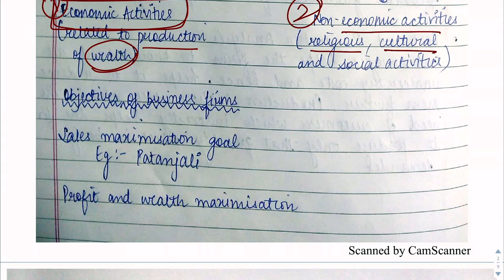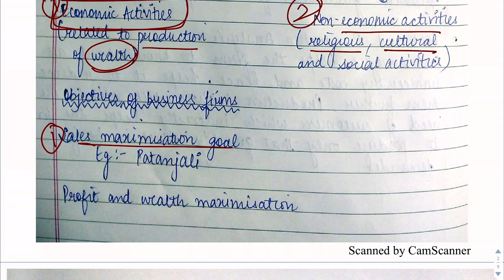The first objective of a business firm is sales maximization. When a firm enters competition, it needs to maximize its sales — sell more and more products so that business grows. After some time, as the business establishes itself, profits will also come in.